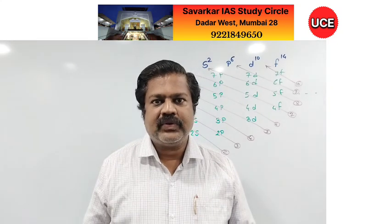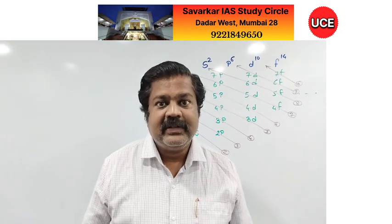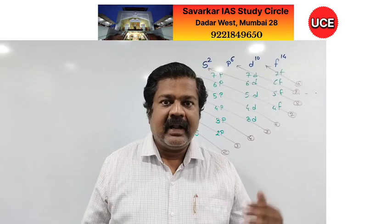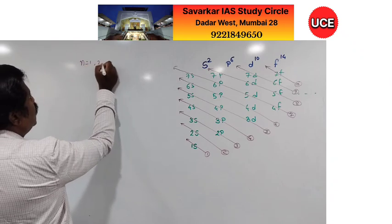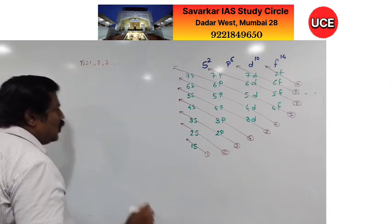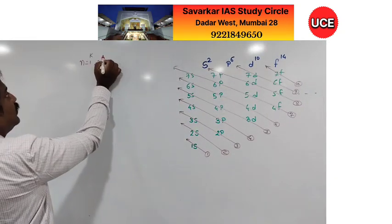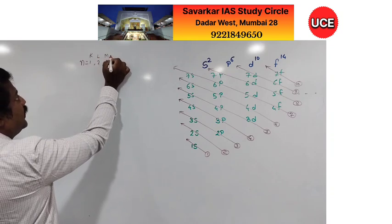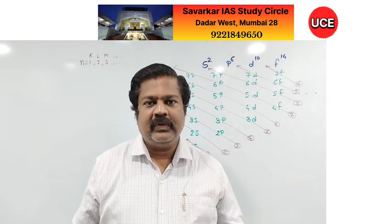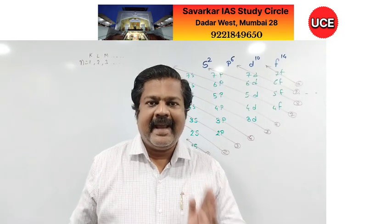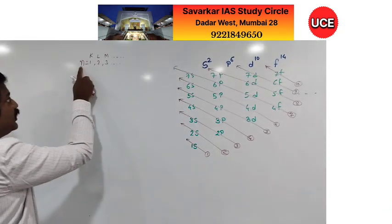The first quantum number is called the principal quantum number. As we discussed, there are shells called n = 1, 2, 3, and so on. They are also termed K, L, M, and so on. This is called the principal quantum number, denoted by small n.